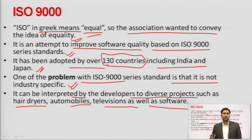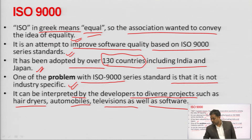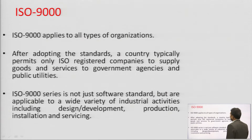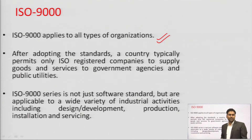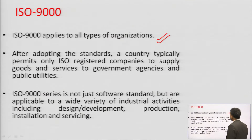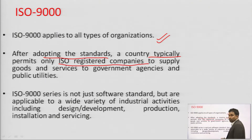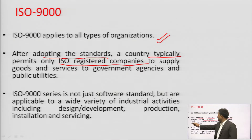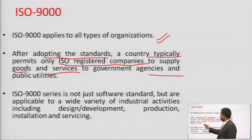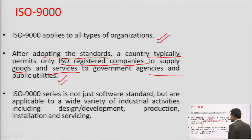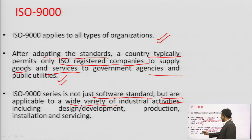Any product can get ISO 9001 accreditation if it adopts a quality process in development and the end product also has quality. ISO 9001 applies to all types of organizations — IT industry, production industry, manufacturing units, plants, or food industry. After quality checking, accreditation is provided. ISO-registered companies must follow standards to supply goods and services to government agencies and public utilities. ISO 9000 series is applicable to a wide variety of industrial activities including design and development.